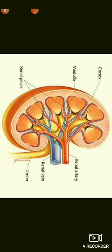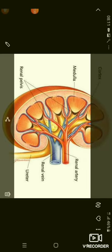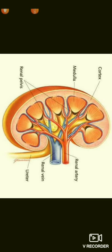The cortex is dotted in appearance and the nephrons are highly coiled in this region, whereas the medulla is straight in appearance and the nephrons run almost straight here. The region between the cortex and medulla is called the juxtamedullary region.